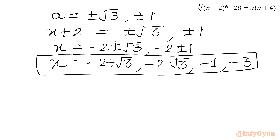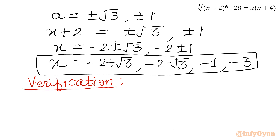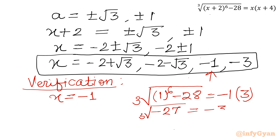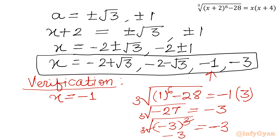Let us verify all 4 values. Let us begin with minus 1, the easiest. For x equal to negative 1: LHS is cube root of (negative 1 plus 2) power 6 minus 28, which is cube root of 1 minus 28, equals cube root of minus 27. RHS with x equal to minus 1 gives minus 1 times (minus 1 plus 4) equals minus 1 times 3 equals minus 3. Cube root of minus 27 equals cube root of (minus 3) cubed equals minus 3. So minus 3 equals minus 3. x equal to minus 1 is verified.